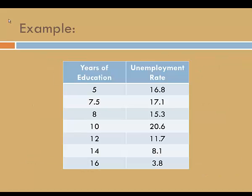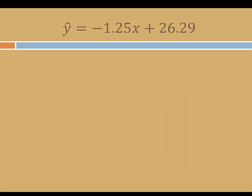Here's a small data set with two variables: years of education and unemployment rate. We can use this data to construct a regression equation. For this data set, the regression equation is y-hat equals negative 1.25x plus 26.29, so the slope is negative 1.25 and the y-intercept is 26.29. We can use the regression equation to predict the unemployment rate based on years of education.